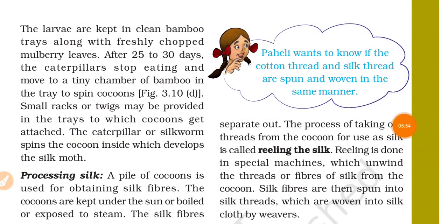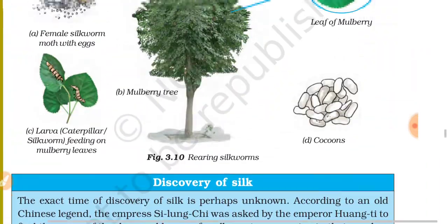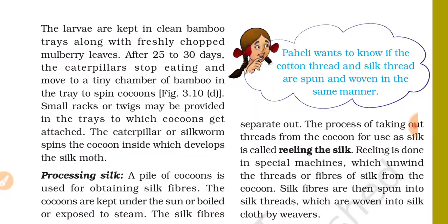In the formation of silk, the larvae are kept in clean bamboo trays along with freshly chopped mulberry leaves. After 25 to 30 days, the caterpillars stop eating and move to a tiny chamber of bamboo in the tray to spin cocoons. Small racks or twigs may be provided in the trays to which cocoons get attached. The caterpillar or silkworm spins the cocoon inside which the silk moth develops.